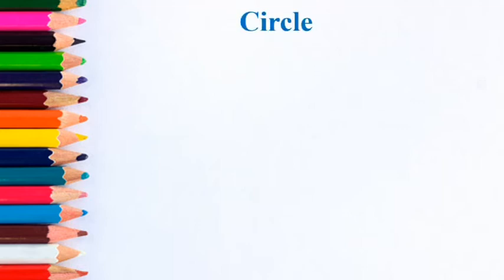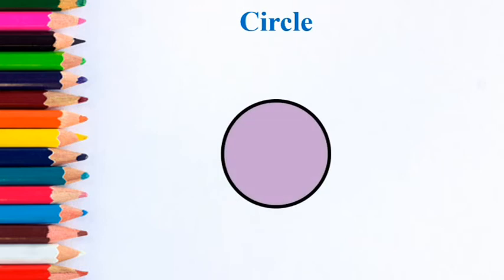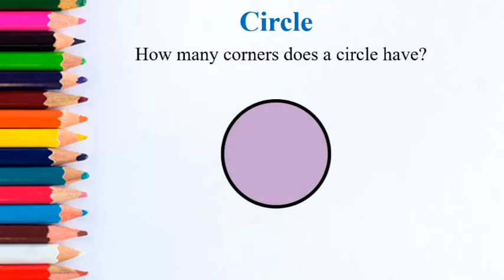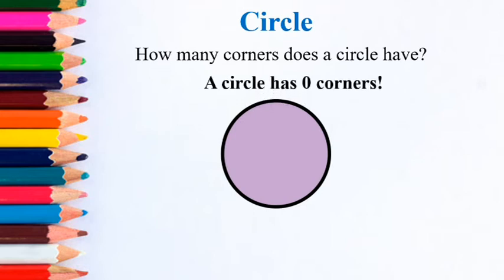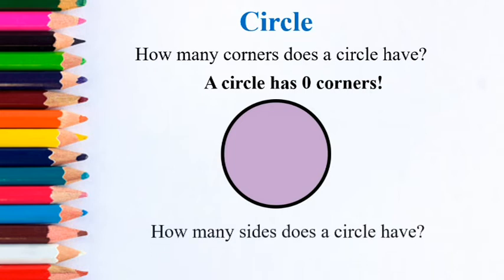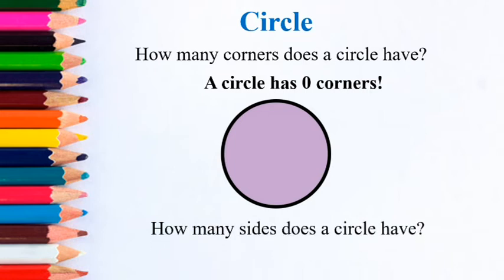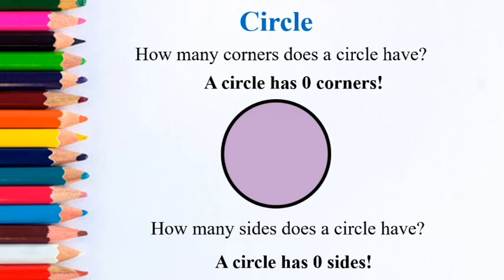The last shape you are going to look at is called a circle. How many corners does a circle have? This is tricky — a circle has zero corners. How many sides does a circle have? A circle has zero sides. You can remember that because a circle looks like a zero.